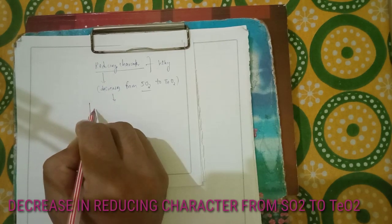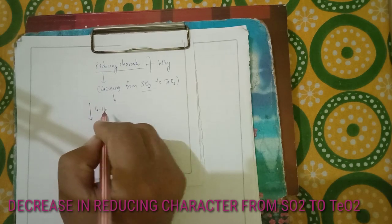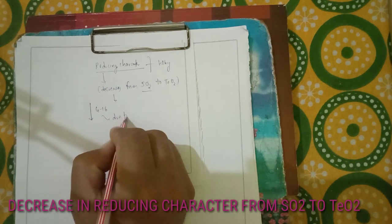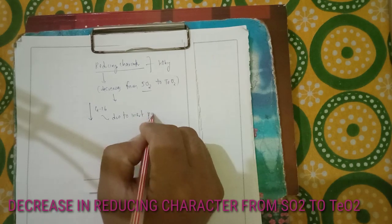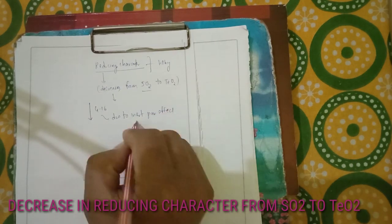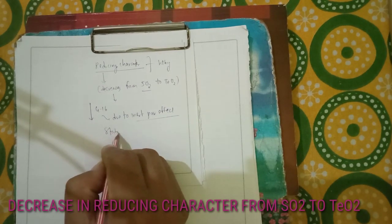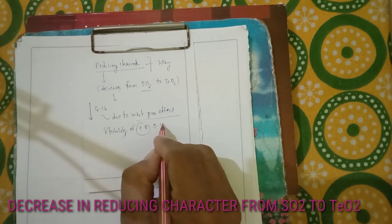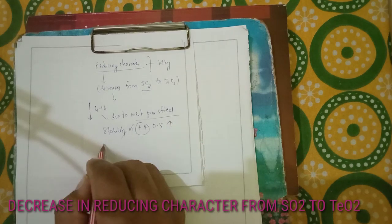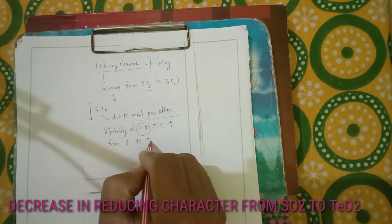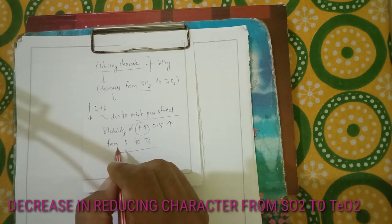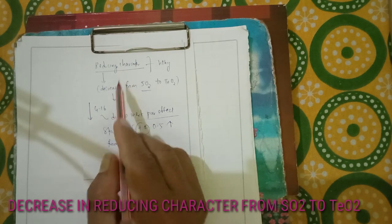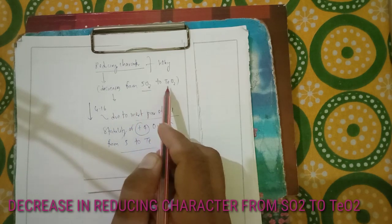On moving down group 16, due to the inert pair effect, the stability of the +4 oxidation state increases from sulfur to tellurium. This is the reason due to which we can say that reducing character decreases from SO₂ to TeO₂.